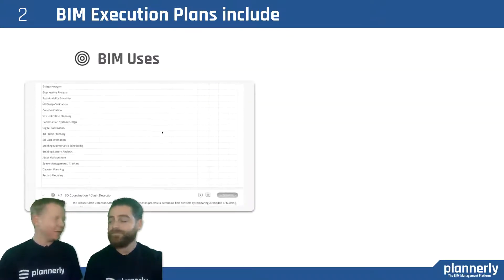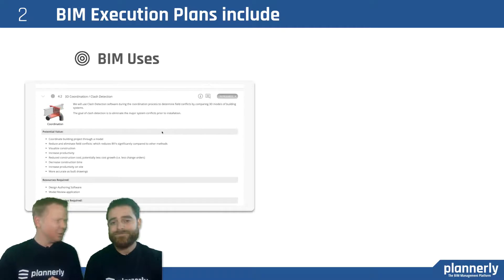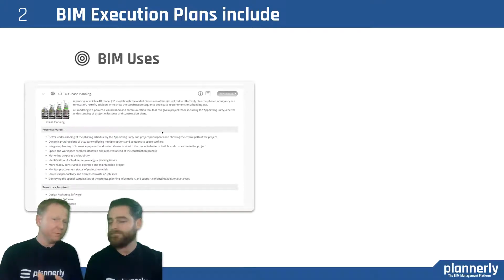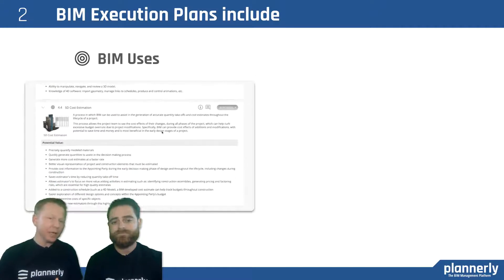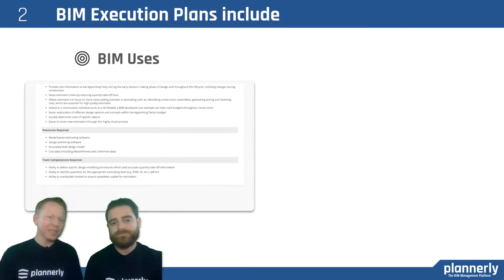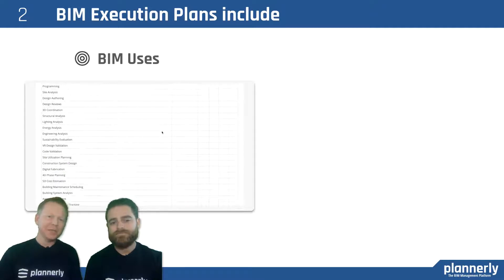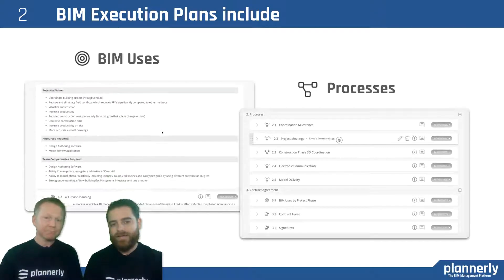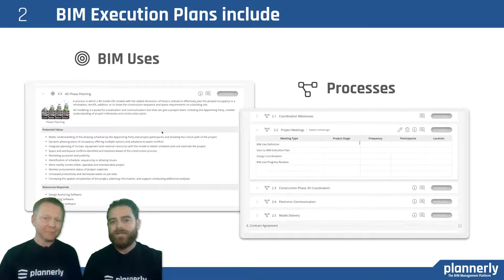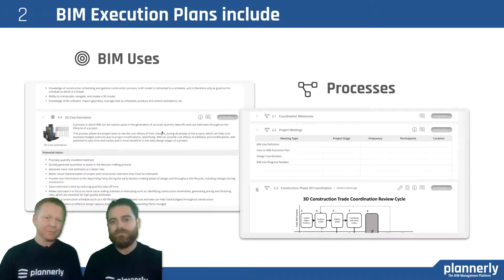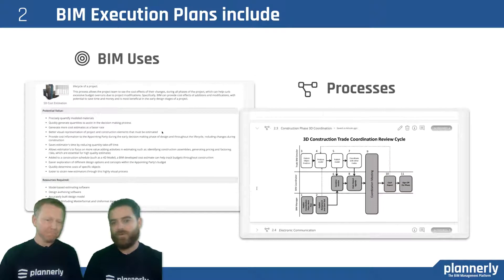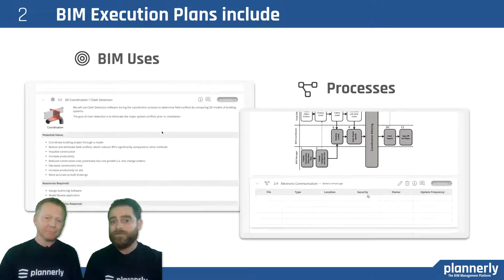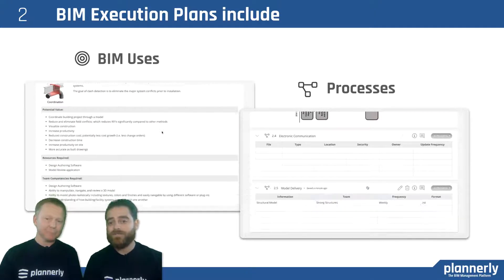Then we need to define what the BIM uses are. Why are we doing this? If we're coordinating, what's the value we're looking to achieve? The 4D phase schedule — why are we doing that? Why are we cost estimating? Why are we getting these quantities? Let's identify the customer and the reason why they're about to do it. Align with your own team what your services are and what your possibilities are, so that aligning that with the client will align expectations on those BIM uses right away.